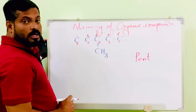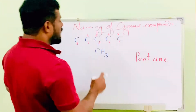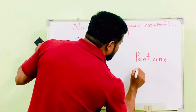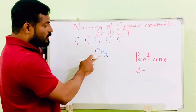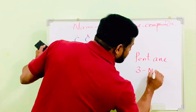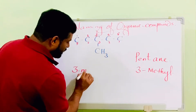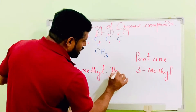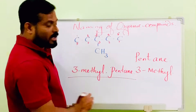So we can choose either numbering direction. The parent chain contains five carbon atoms, so the root is 'pent.' This parent chain contains only single bonds, so the compound is pentane. Now the substituent on the third carbon is CH₃ — as we learned in the previous video on alkyl groups, this group is a methyl group. So the compound name is 3-methylpentane.